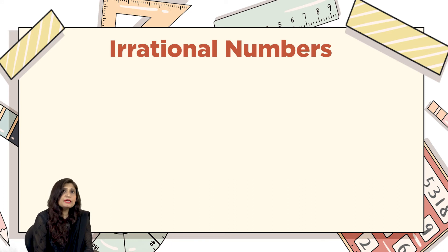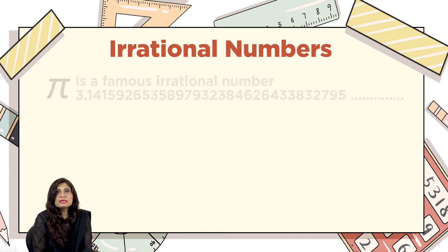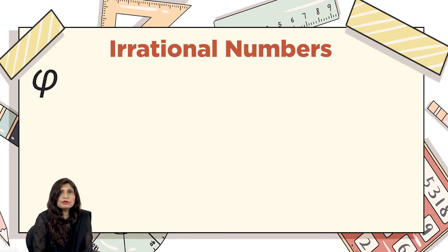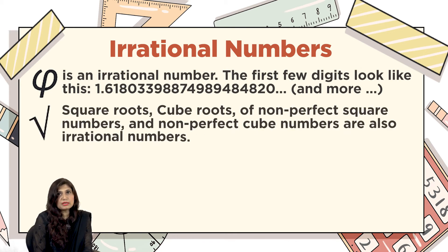A famous irrational number is pi. If you look at the value of pi, you can see that it is non-recurring and non-terminating, so it's an irrational number. The same goes for the golden ratio — it is also a non-recurring and non-terminating value, making it irrational. Similarly, the square root and cube root of non-perfect square and non-perfect cube numbers are also irrational numbers.